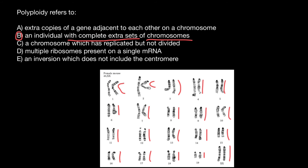One more note: if an organism is diploid, then its gamete would be haploid and would have one set of chromosomes. But if an organism is tetraploid, then the haploid gamete would have two sets of chromosomes. So you have to recognize this.